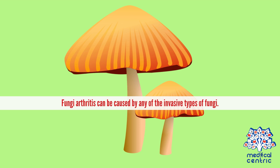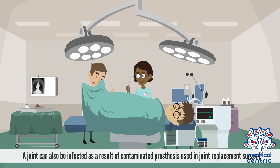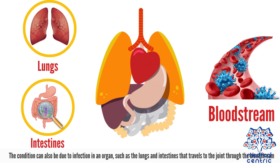Fungal arthritis can be caused by any of the invasive types of fungi. The infection can result from directly injecting medications that are contaminated by fungus into the joint. In some cases, a joint can also be infected as a result of a contaminated prosthesis used in joint replacement surgery. The condition can also be due to infection in an organ, such as the lungs and intestines, that travels to the joint through the bloodstream.